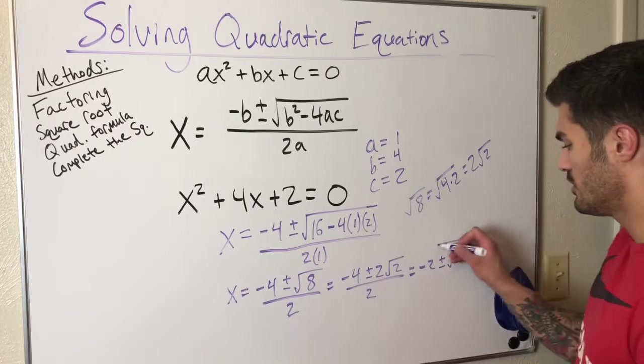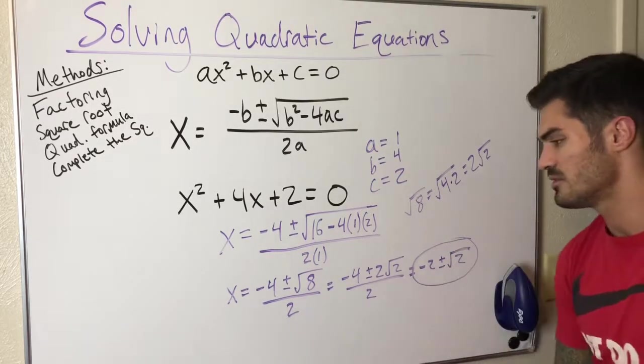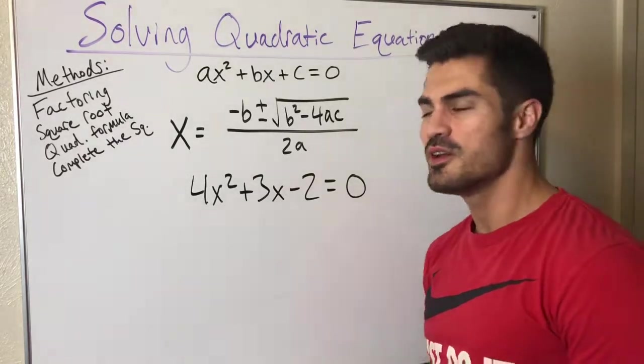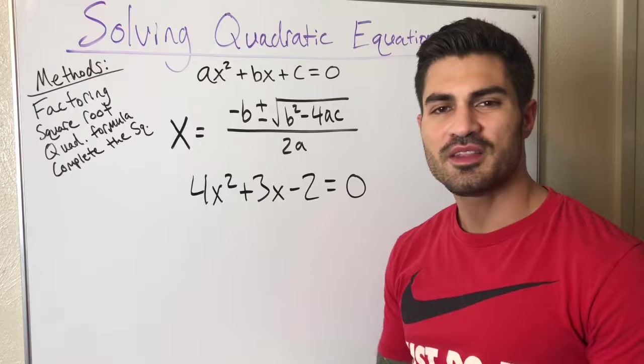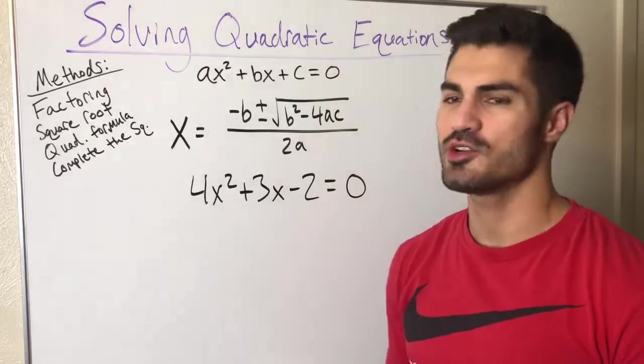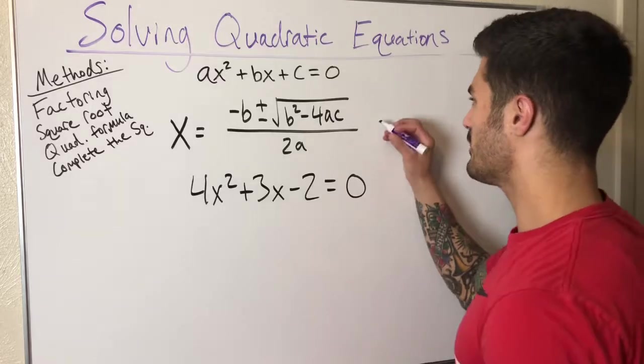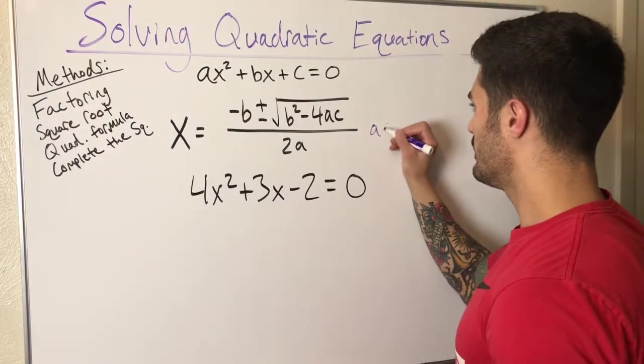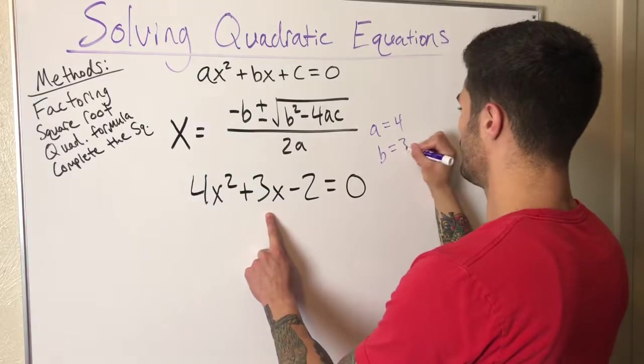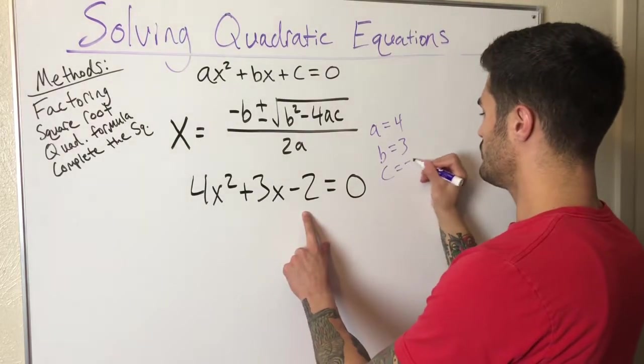For our next example, again you can try to factor this using like the AC or x method or guess and check, but you're not going to be able to. So we're going to go ahead and go straight into the quadratic formula. I'm going to write out our a, b, and c. a equals 4, b equals 3, c equals negative 2.